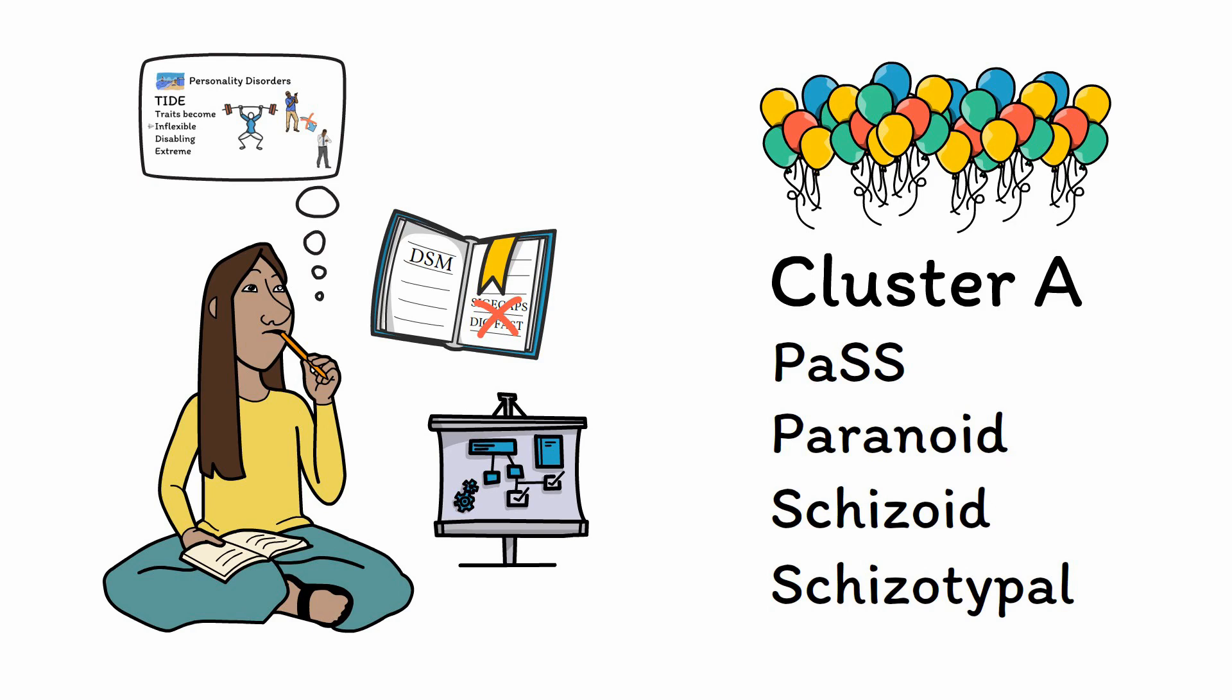In actual practice, cluster A disorders rarely come to clinical attention, as each of the disorders has features that make people less likely to seek care. These disorders have the highest chance of being misdiagnosed as psychotic disorders due to the overlap in their symptoms. For this reason, we'll take a moment to compare each of the three disorders to schizophrenia. Let's go over each of these one by one.